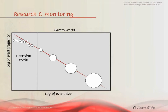Taking the Pareto curve and looking at it again, I've made one change: I still have the double log scales, but I've increased the size of the events as they move to the right to give an indication of the higher level of impact.